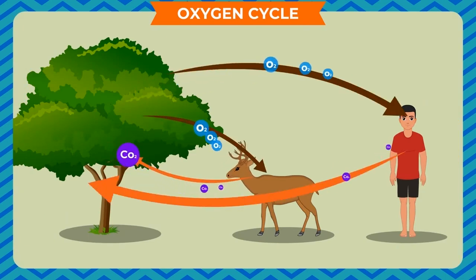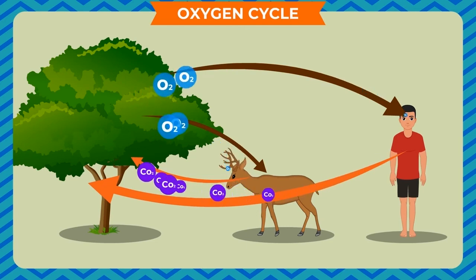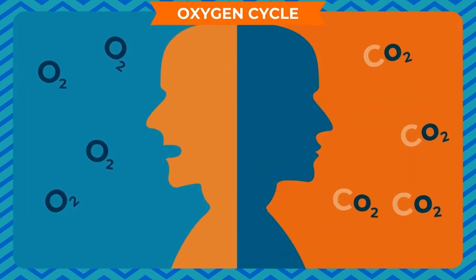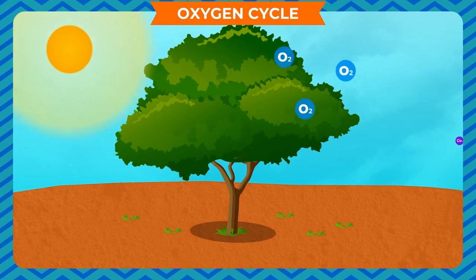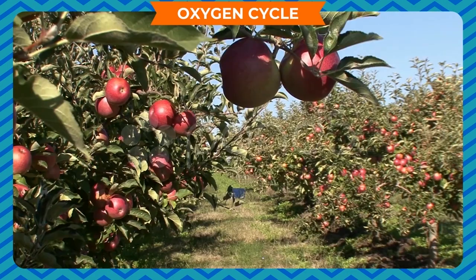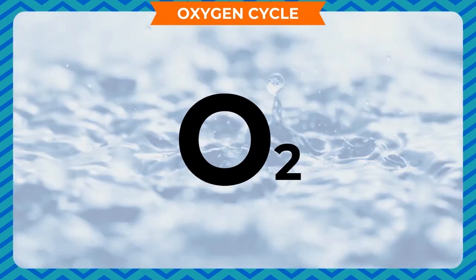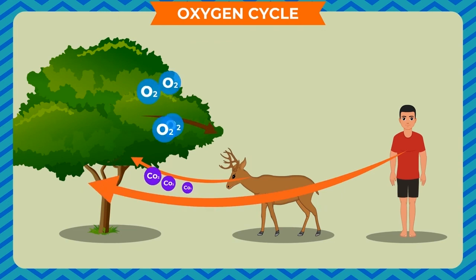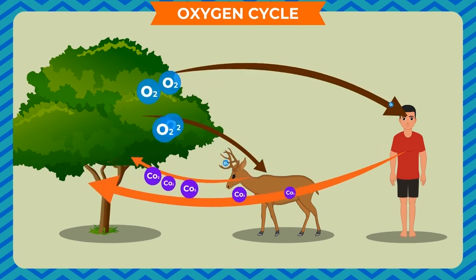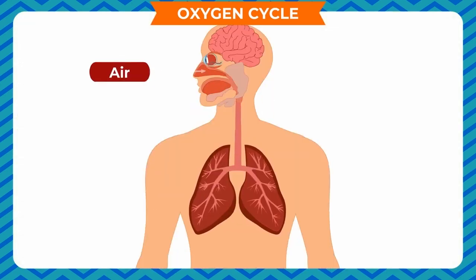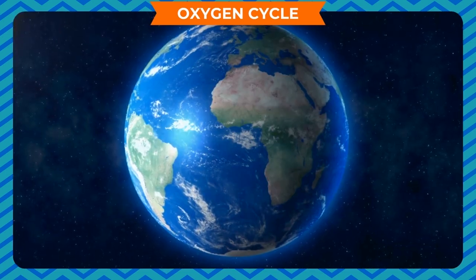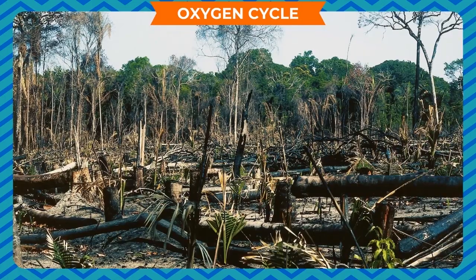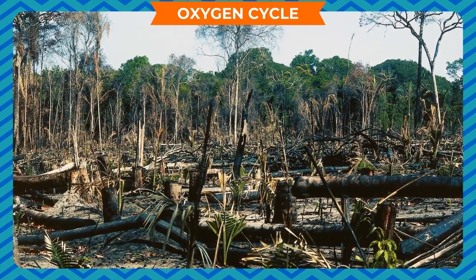Oxygen cycle: atmospheric air consists of 21% oxygen gas by volume, providing a cyclic relationship between plants and human beings. The circulation of oxygen in various forms through nature is called the oxygen cycle. Plants absorb carbon dioxide from the atmosphere during photosynthesis and produce starch, food, water, and oxygen. This oxygen is released into the atmosphere and absorbed by humans and animals in respiration, which in turn produces carbon dioxide released back into the atmosphere. The major factor disrupting the oxygen cycle is deforestation.